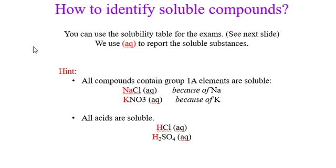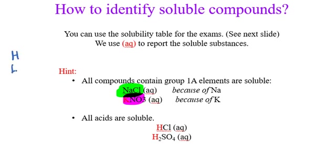What is the rule? Rule one says: all compounds containing group 1A elements are soluble. If we have a formula like NaCl, because Na is placed in group number 1, it makes a soluble compound. It means you can easily predict NaCl can be dissolved in water. How about KNO3, potassium nitrate? Because of K — potassium, group number 1 — it is going to be soluble in water. In other words, if you see any group number 1 element in a compound, you just write (aq) — soluble. So it doesn't matter what the formula is, like Li2SO4 — you just write (aq) because it contains lithium.